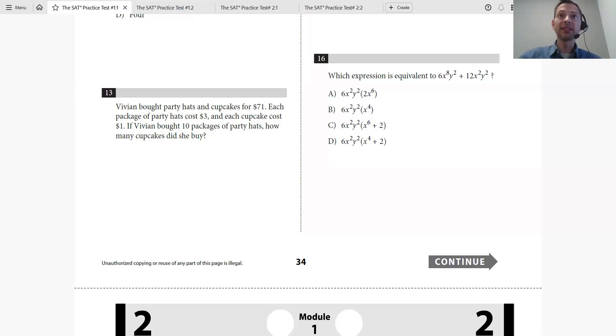Vivian bought party hats and cupcakes for $71. Let's make them as variables. Let's say the number of party hats are X and the number of cupcakes are Y.